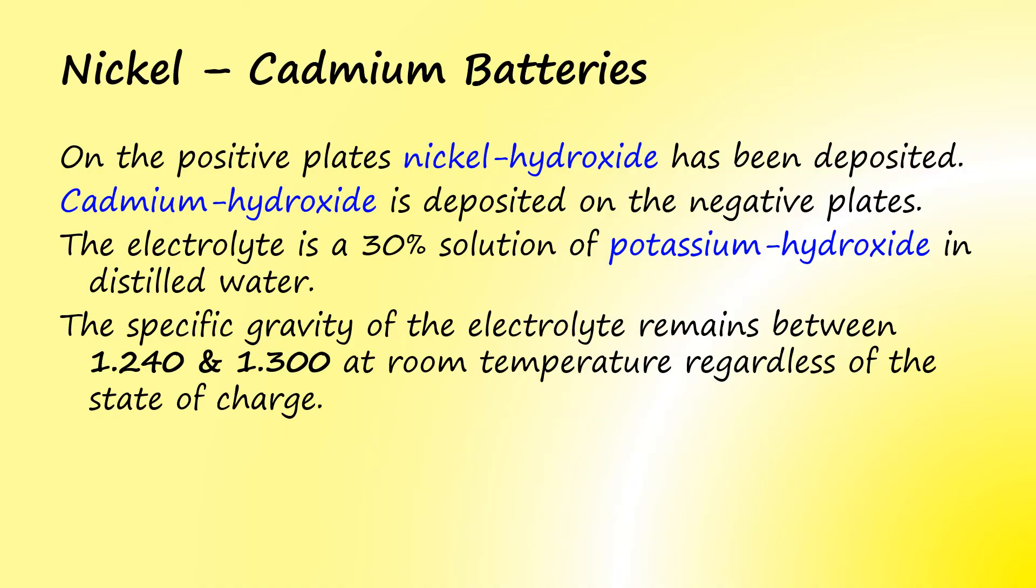On the positive plates of a NICAT battery, nickel hydroxide has been deposited. Cadmium hydroxide is deposited on the negative plates. The electrolyte is a 30 percent solution of potassium hydroxide in distilled water. The specific gravity of the electrolyte remains between 1.24 and 1.3 at room temperature regardless of the state of charge. And for this reason, its state of charge cannot be determined with a hydrometer.